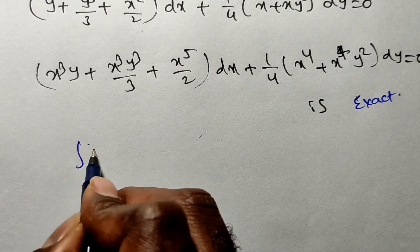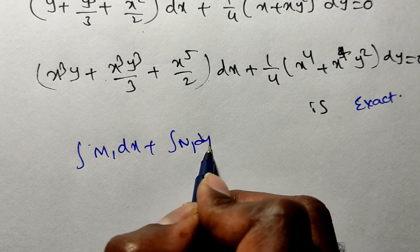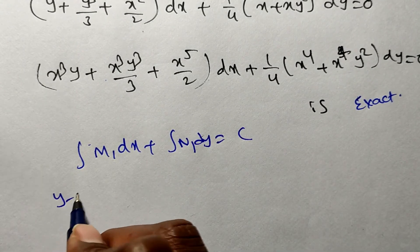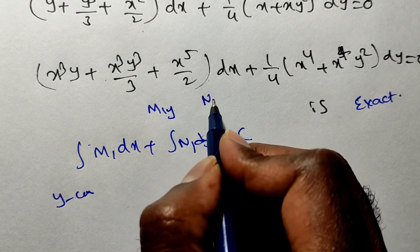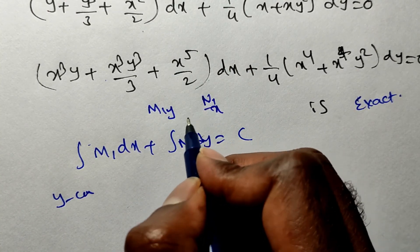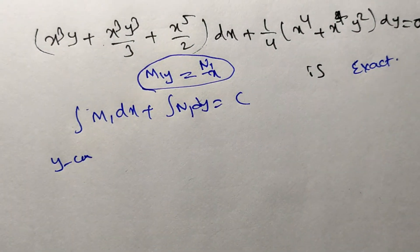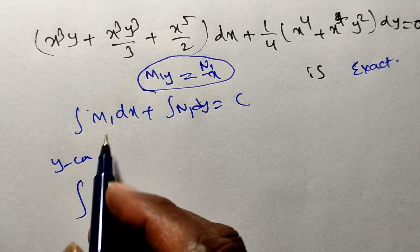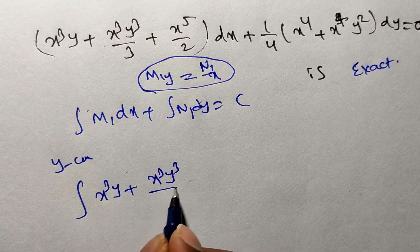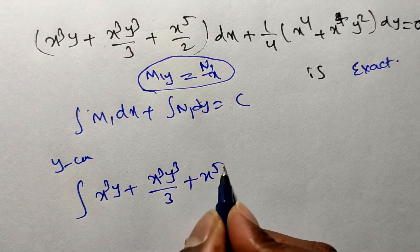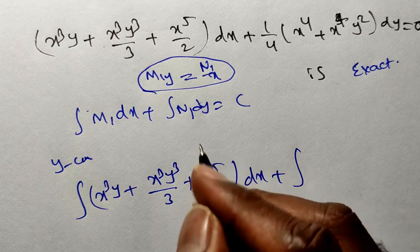The general solution is ∫M₁ dx + ∫N₁ dy = c, where y is treated as constant in the first integral. What is M₁? It is x³y + x³y³/3 + x⁵/2. For the second integral of N₁, remember: do not include any x terms — take only terms free from x. Both terms in N₁ contain x⁴, so the second integral contributes 0.